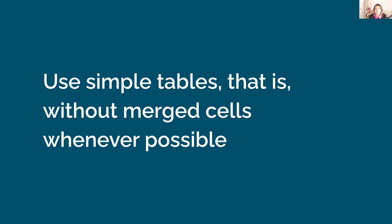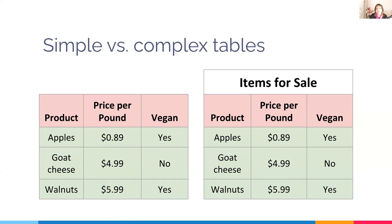Use simple tables — that means without merged cells whenever possible. Tables are already more difficult to navigate than other content, but merged cells with no real functional need disorient people navigating the table who cannot see it. A title or category that's been put into a merged cell as a caption could just be text outside the table. Let's remember to have well-formatted tables so they work well for everyone.